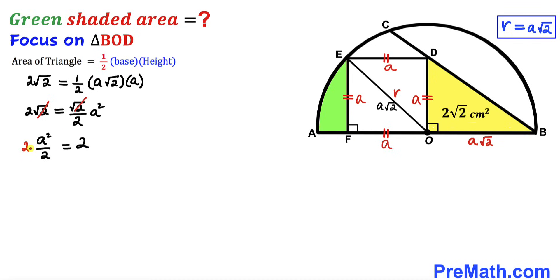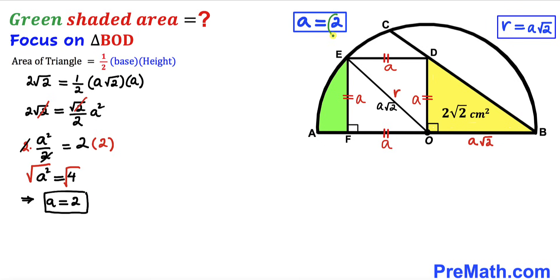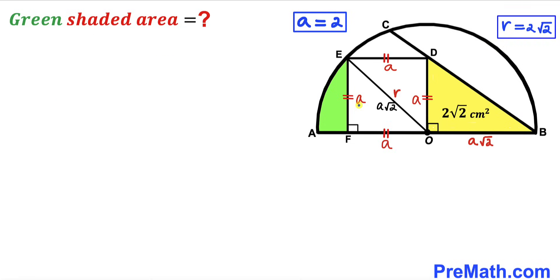Multiplying both sides by 2, we get a² = 4. Taking the square root of both sides gives a = 2 cm. Therefore our radius r = 2√2 cm. All side lengths of the square are 2, and both radii OE and OB equal 2√2 cm.